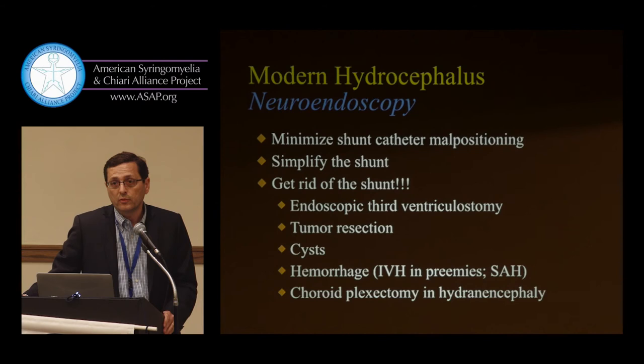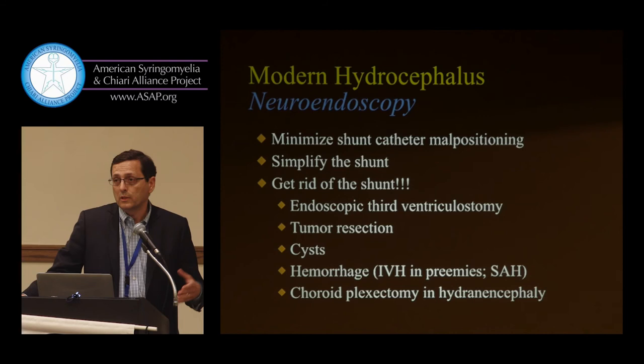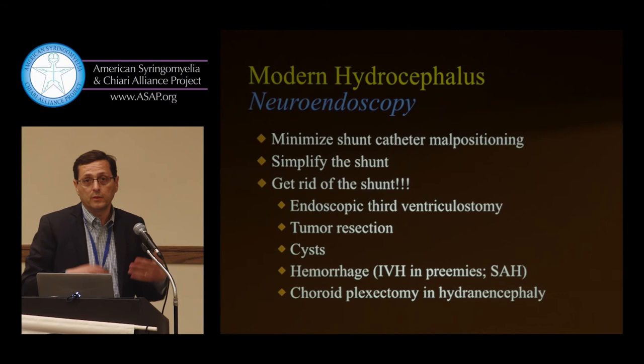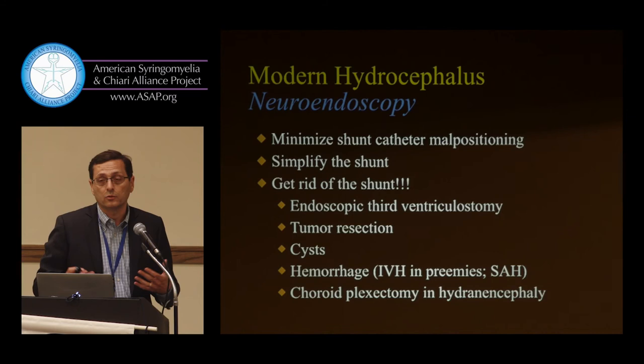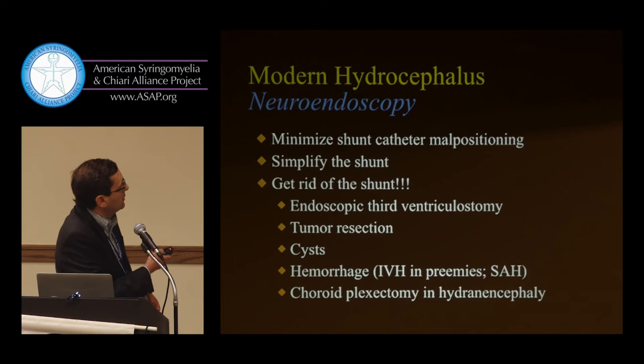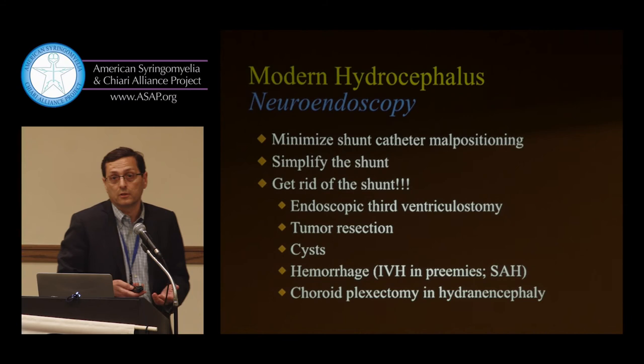Shunts, as much as we try to improve them, are frustrating — they are prone to error and prone to complications. We'd like to get rid of them if we can. This is where endoscopy came into play. Neuroendoscopy has really revolutionized pediatric neurosurgery in the past 20–25 years. It helps us minimize shunt catheter malpositioning, simplify the shunt, and sometimes even eliminate the shunt entirely.